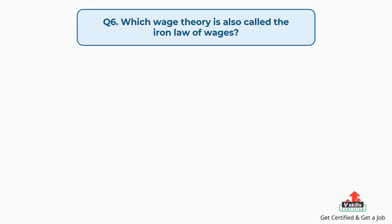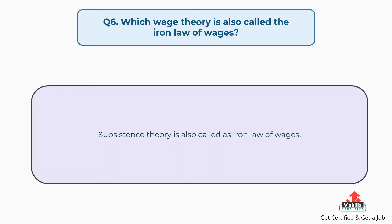Question number six: Which wage theory is also called the iron law of wages? The answer is, the subsistence theory is also called the iron law of wages.